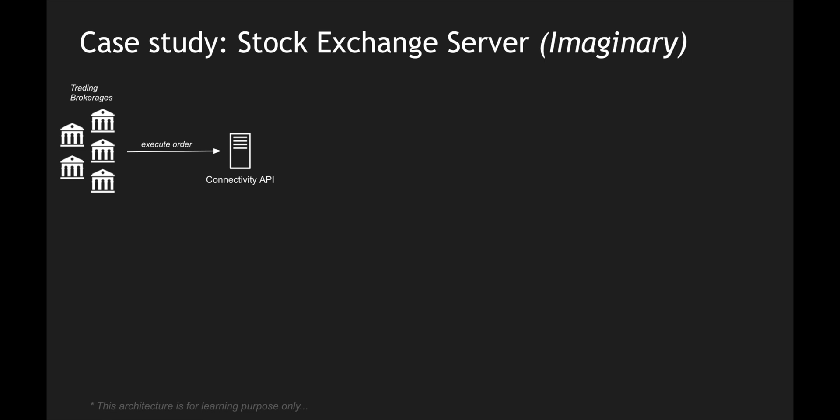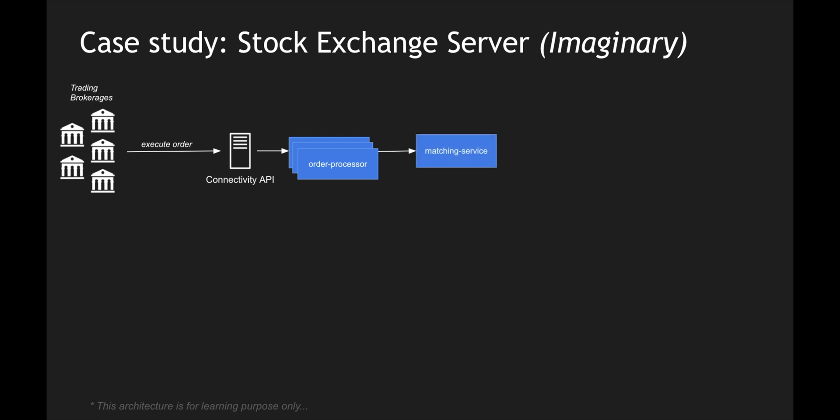These orders are placed — for example, you're placing a buy or a sell for a particular stock — and in the background this order gets processed. These processing engines could be more powerful, so there could be multiple instances of these orders. They get processed and sent to something called the matching service, so orders from different brokerages are sent to the matching service to match the buy and the sell and make an execution.